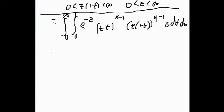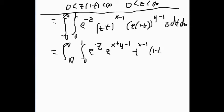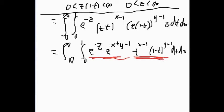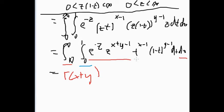Looking at this integral, one part contains only z's and no t's, and the other part contains only t's and no z's, so we can separate them. The z-part is just Γ(x+y), and the t-part is just B(x,y). So we can divide by Γ(x+y) and get the original result: B(x,y) = Γ(x)Γ(y)/Γ(x+y).